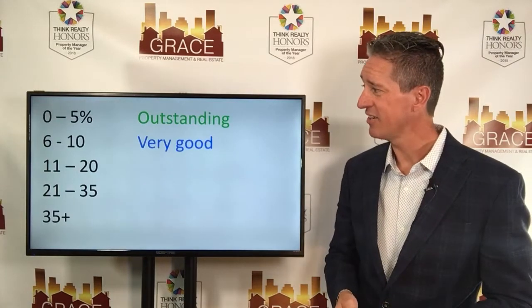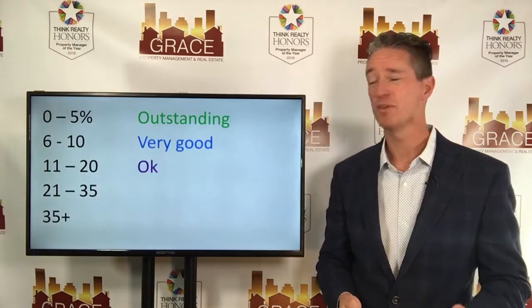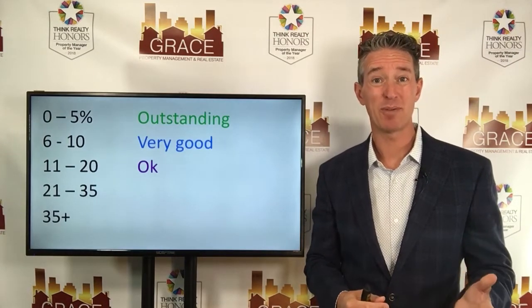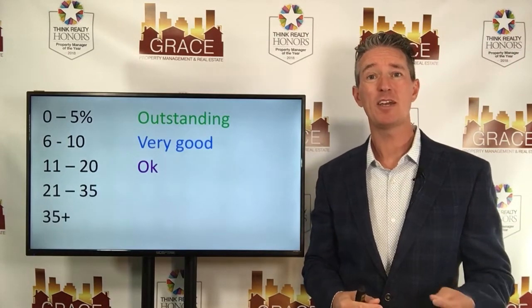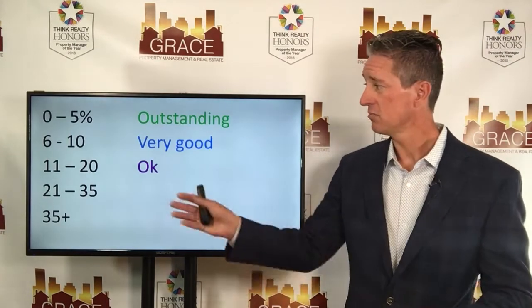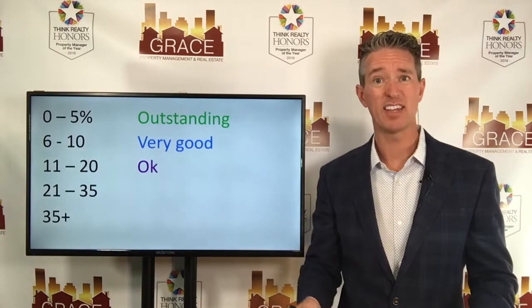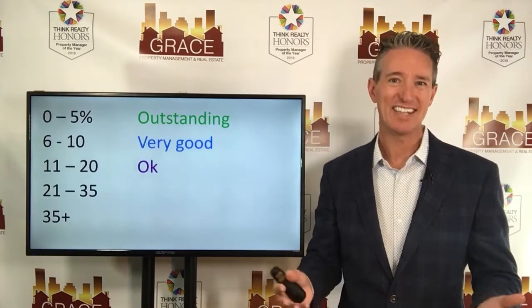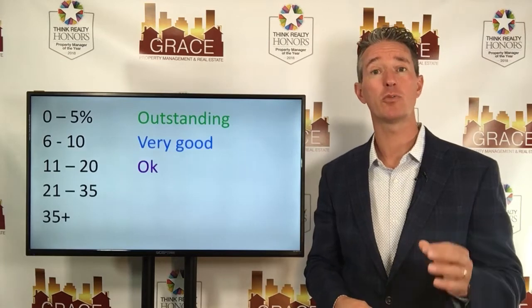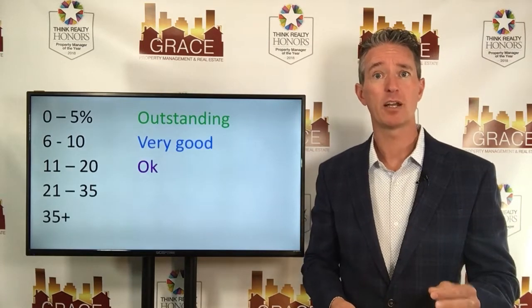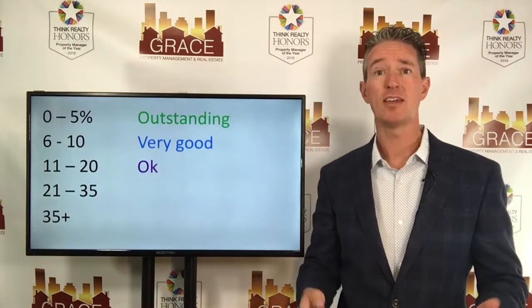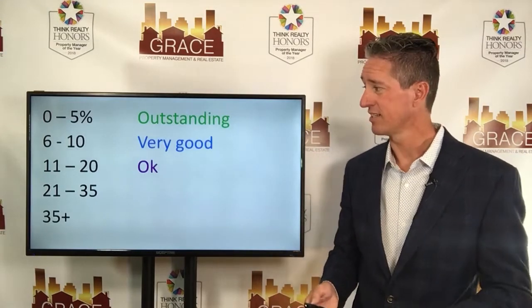What about the 11 to 20% delinquency range? That's okay, but you shouldn't be satisfied with that — it should raise an eyebrow. Maybe if you've got some real low-income housing, you're going to be in that range, and that's just the way it is month after month. Not a great place to be, but depending on your region and the types of properties you manage, that realistically may be where you are and as good as it can get.